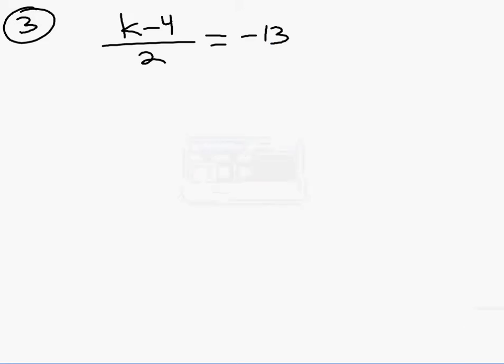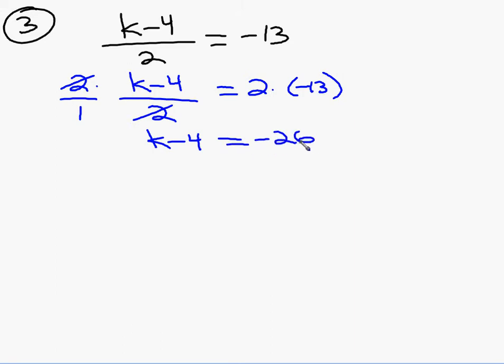Good. I've been seeing some good things with your work. I need to multiply both sides by two. On this side over here, it's going to make the twos go away and I will just have a k minus four. On the right side, when I multiply it by two, two times negative thirteen is negative twenty-six. And now I just add four to both sides to finish. So k equals negative twenty-two.